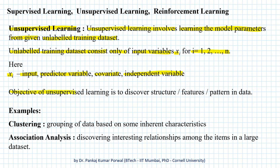The objective of unsupervised learning is to discover structure, features, or patterns in the data based on some inherent characteristics of the data. Because the output variable is not part of our data set, there is no explicit supervisor or judge that can guide our learning, and that's why this learning is called unsupervised learning.